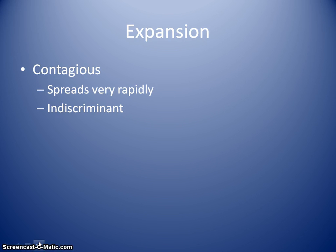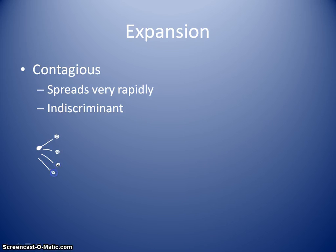The next type, a form of expansion diffusion, is contagious diffusion. A lot of times students think of this as some sort of illness, but it just describes the way in which a characteristic diffuses into space. It spreads very rapidly, is indiscriminate of gender, race, or ethnicity — it just moves across space very rapidly and anybody can take part. It's really more about the characteristic of speed. It starts with one person and in a very short amount of time moves to several others. I typically like to think of a YouTube video that goes viral — something that catches on very quickly.